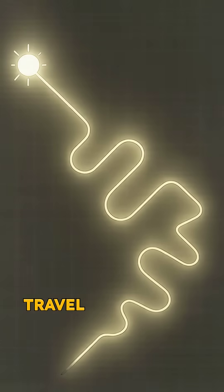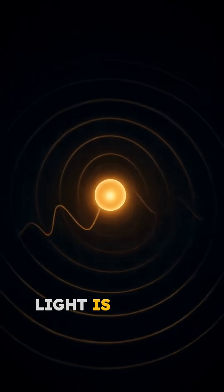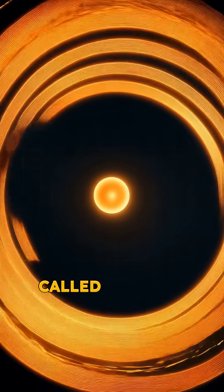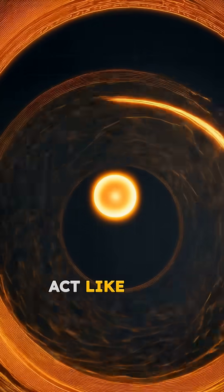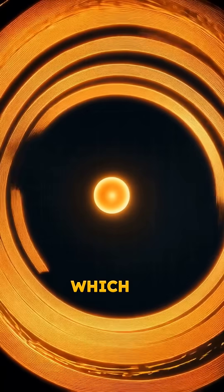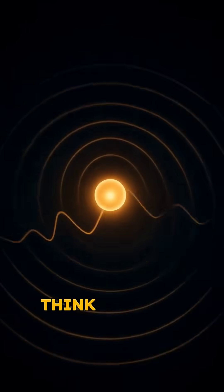Light doesn't actually travel in straight lines like everyone thinks it does. Light is made up of tiny energy packets called photons that act like both waves and particles simultaneously, which is mind-blowing when you really think about it.